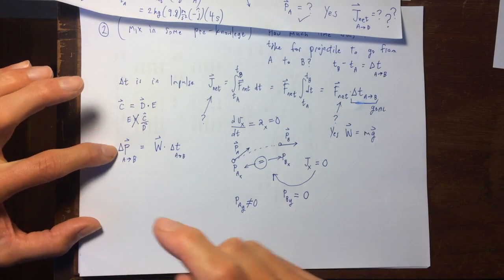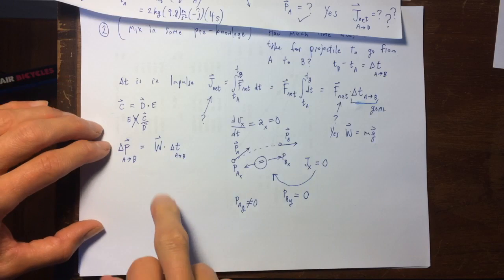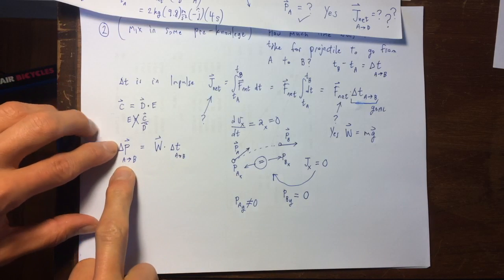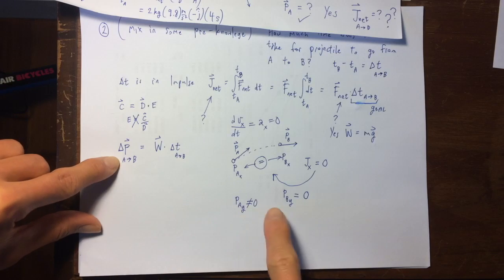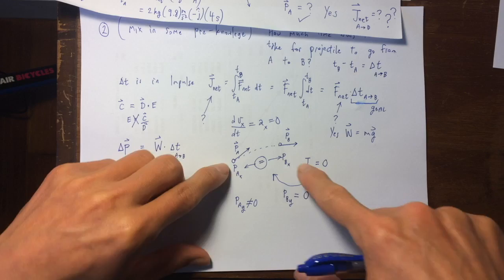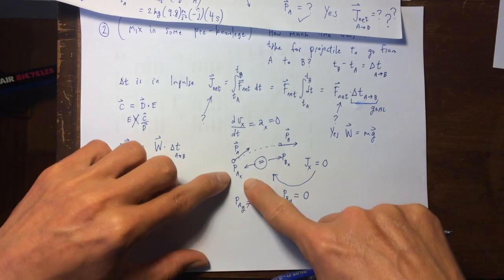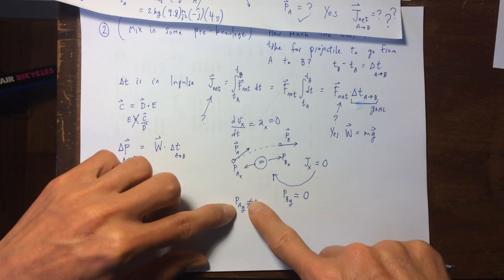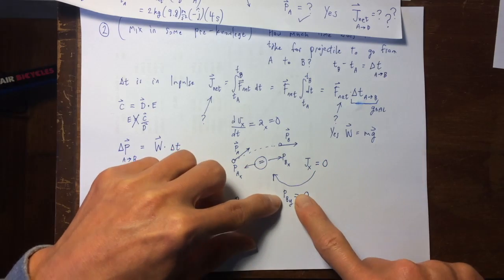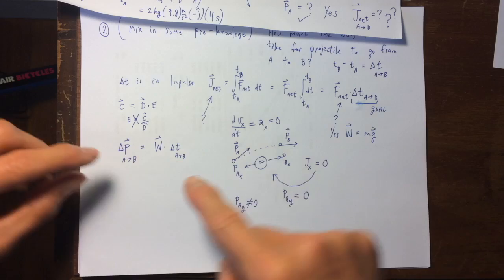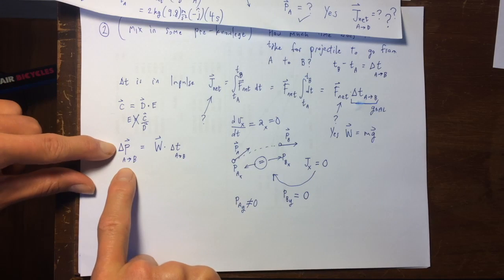But p sub a sub y, the y component of the momentum at the beginning, this is not zero. So if I can figure out the relationship, or I can figure out what delta p is, from a to b.